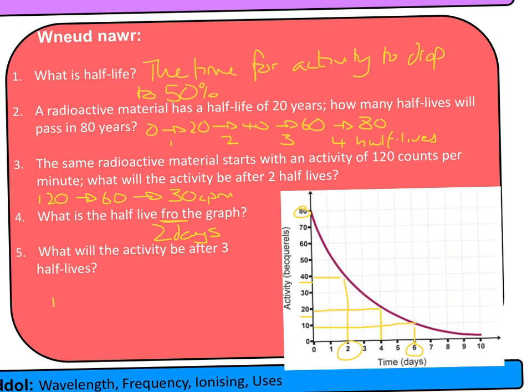After six days we have an activity of 10 becquerels. On the graph, each half-life is two days — every time it halves, it takes two days. The next half-life will give 5 becquerels at eight days, then 2.5 becquerels at ten days. The half-life stays the same but the activity reduces.